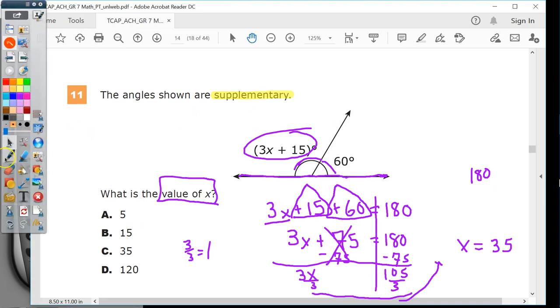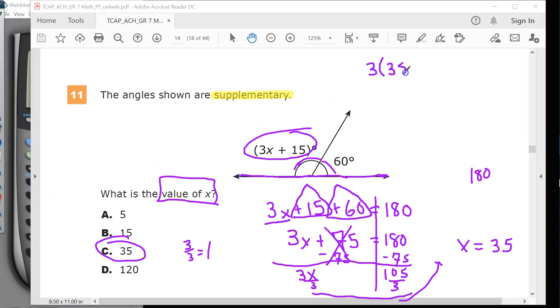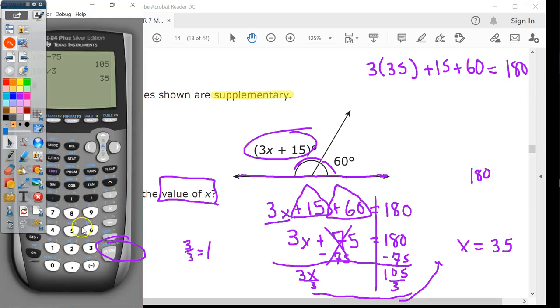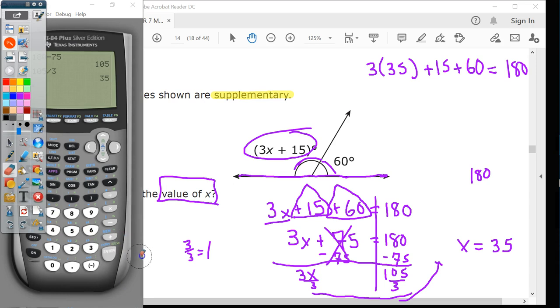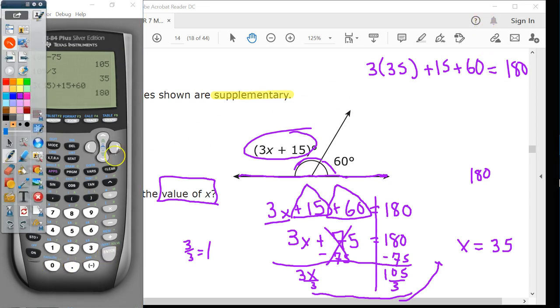So, I'm going to look for my answer. And there it is. Can you test your answer? Of course, you can test your answer. All you have to do is go back to your original equation here, substitute in that value. So, I will do 3 times 35 plus 15 plus 60. And it should equal 180. So, let's just test that out. And spoiler alert, I'm not going to test it out in my head. So, it checks out. So, I'm good there. My answer to number 11 is C. Right there.